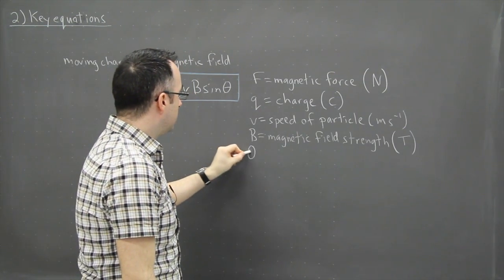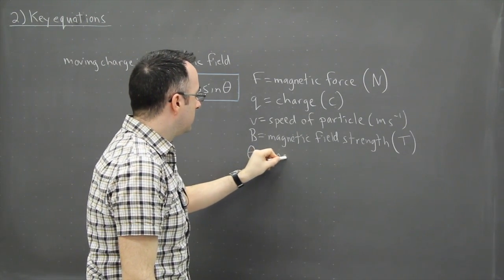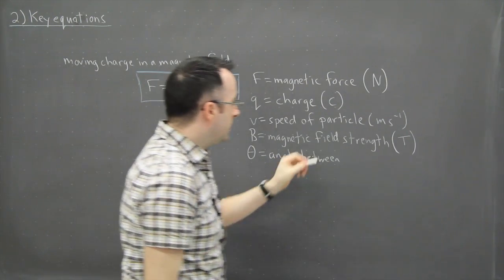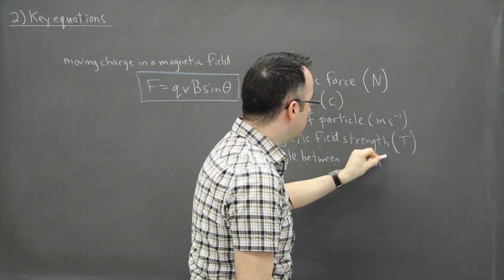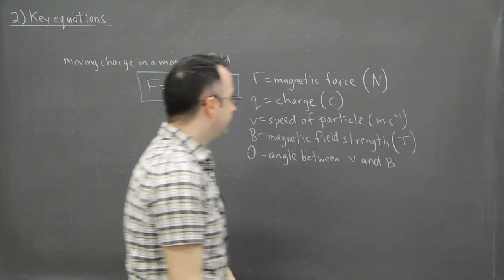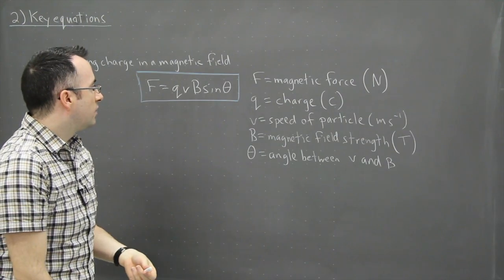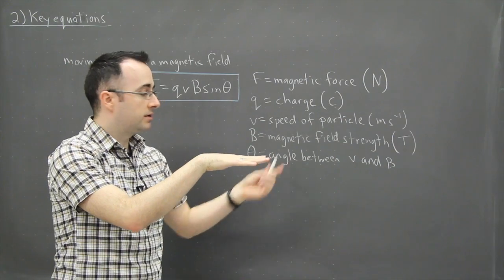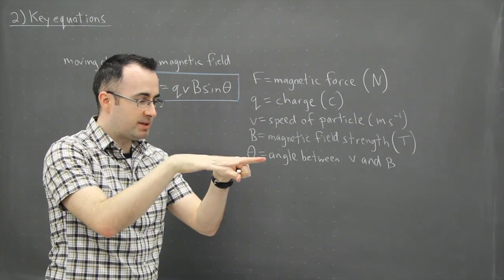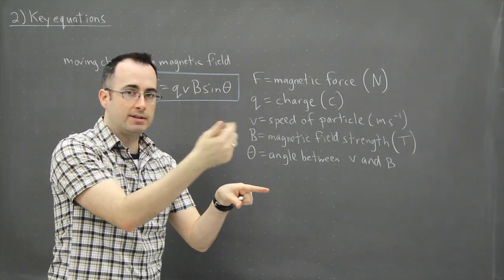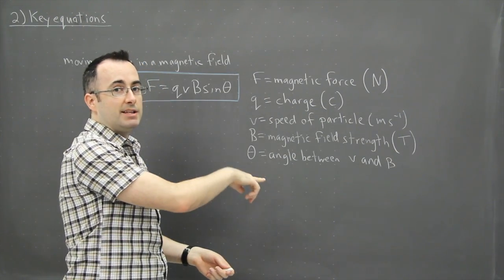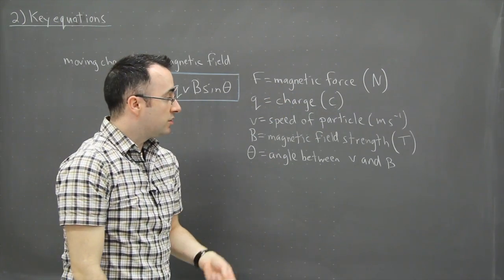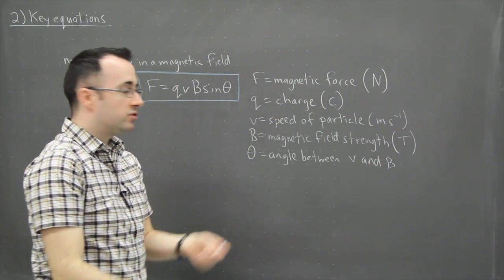We've got B which is magnetic field strength measured in Teslas. And finally we have theta. So theta is the angle between, now in this case it's going to be between the speed and the magnetic field strength. In other words, or the magnetic field. So what I mean by that is, depending on how it's moving along, you can actually calculate—well, if you know which way it's going and you know which way the magnetic field lines are oriented, then you can figure out what the angle is between them. And from there you can figure out the magnitude of the magnetic force.